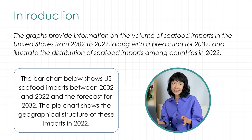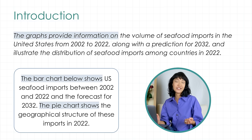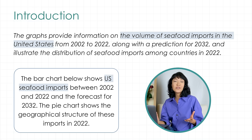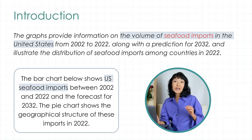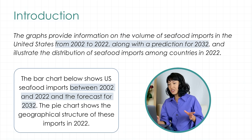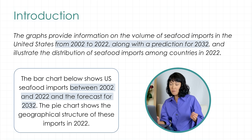The paraphrasing is light. Instead of saying 'the bar chart shows' or 'the pie chart shows,' I used 'the graphs provide information on.' Instead of 'US seafood imports,' I wrote 'the volume of seafood imports in the United States.' I repeated the words 'seafood imports' because that's what this task is about, and I'm going to use them many times throughout the answer. It's okay to repeat keywords. Instead of 'between 2002 and 2022 and the forecast for 2032,' we have 'from... to... along with the prediction for.' So that was the description of the first chart.